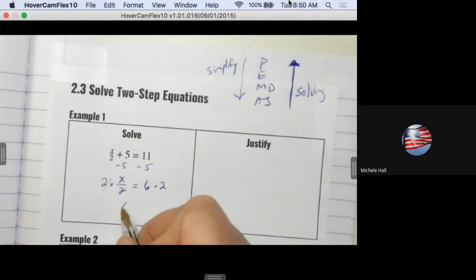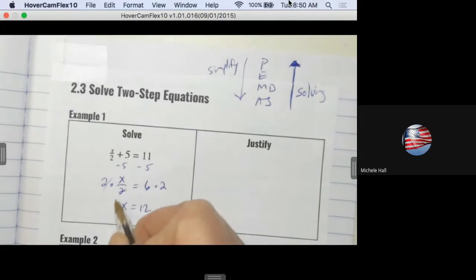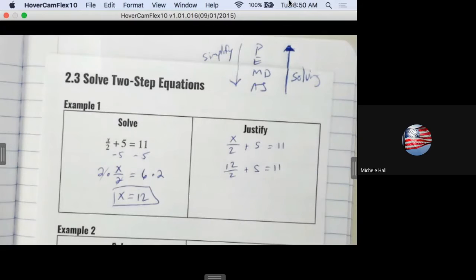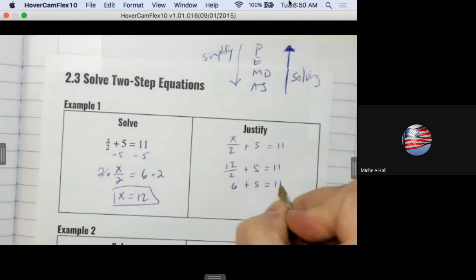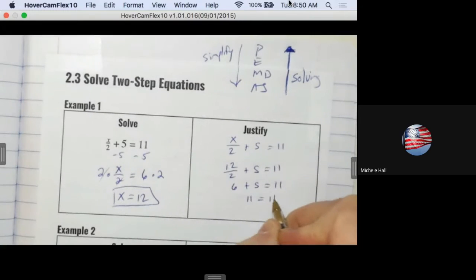The opposite of dividing is to multiply by two - dividing by two, I'm going to multiply by two. Cancel, I get X equals 12. Now I'm actually simplifying by using PEMDAS forward. I would start with multiplying and dividing first - 12 divided by 2 - and then I would finish with my addition.